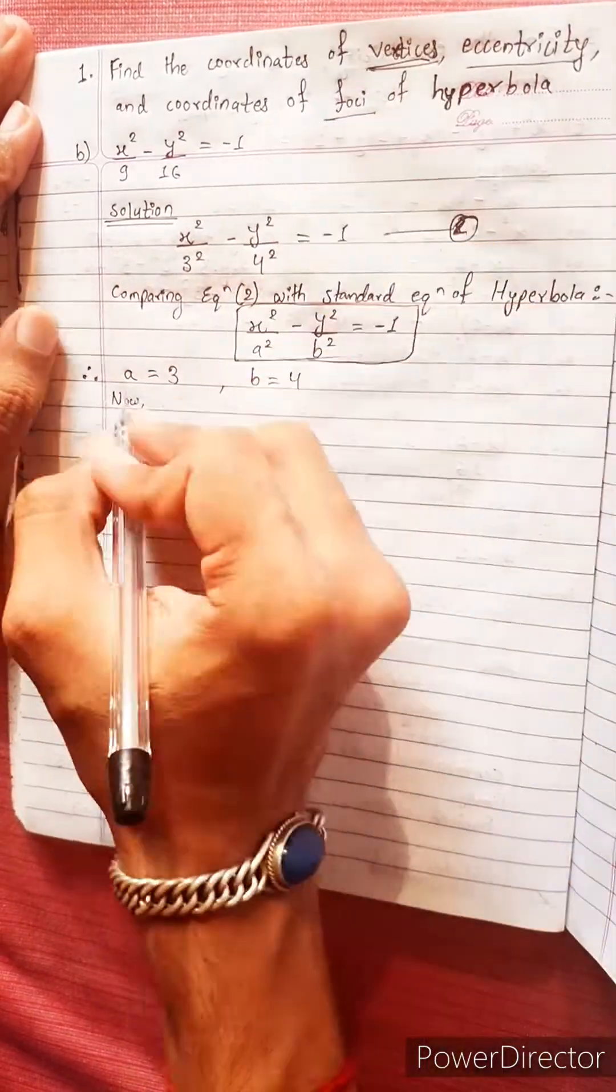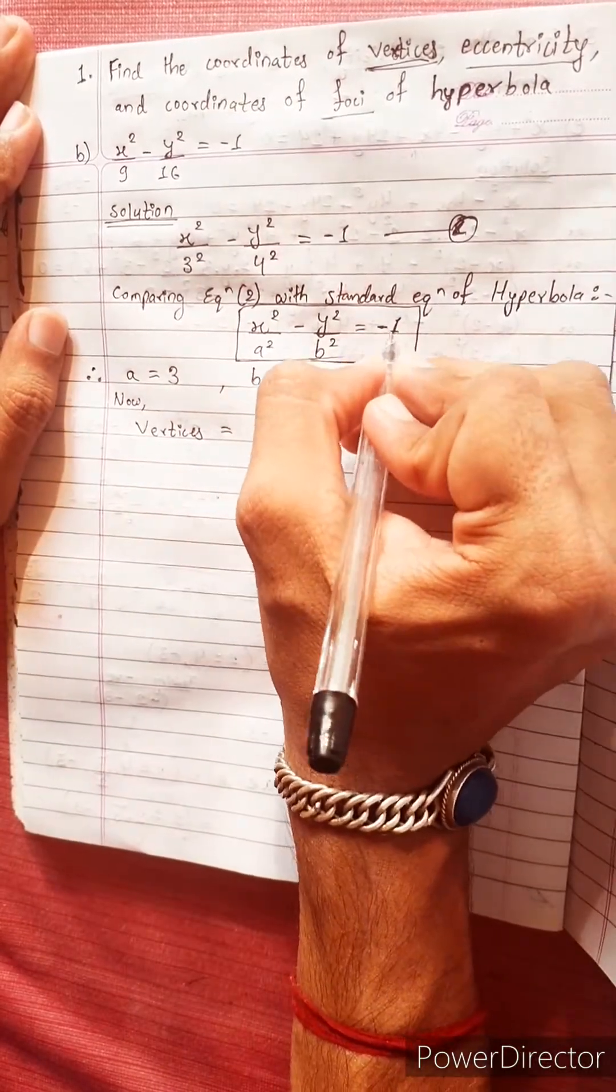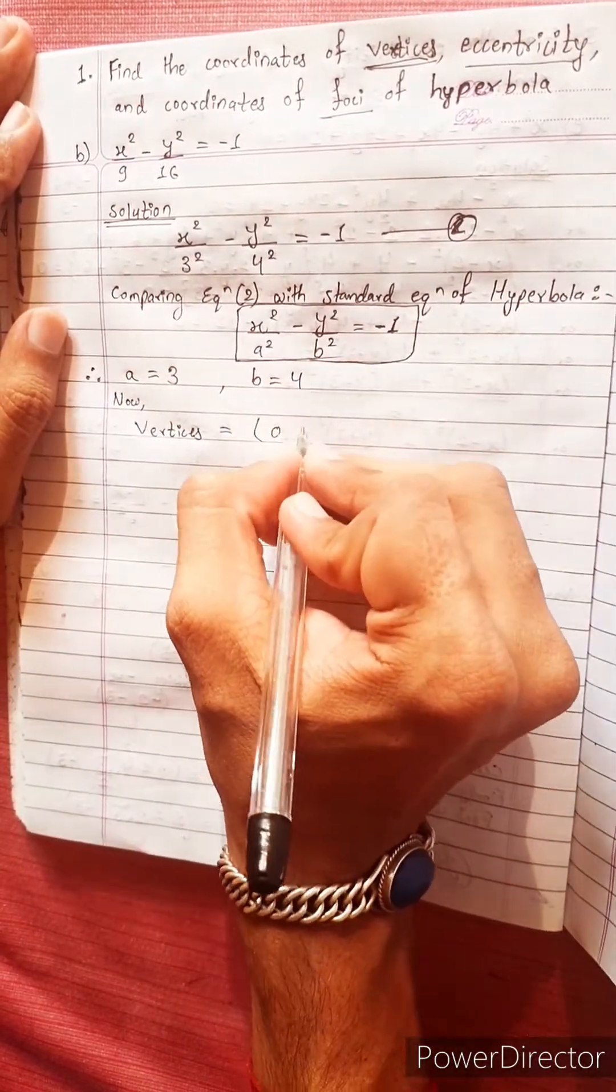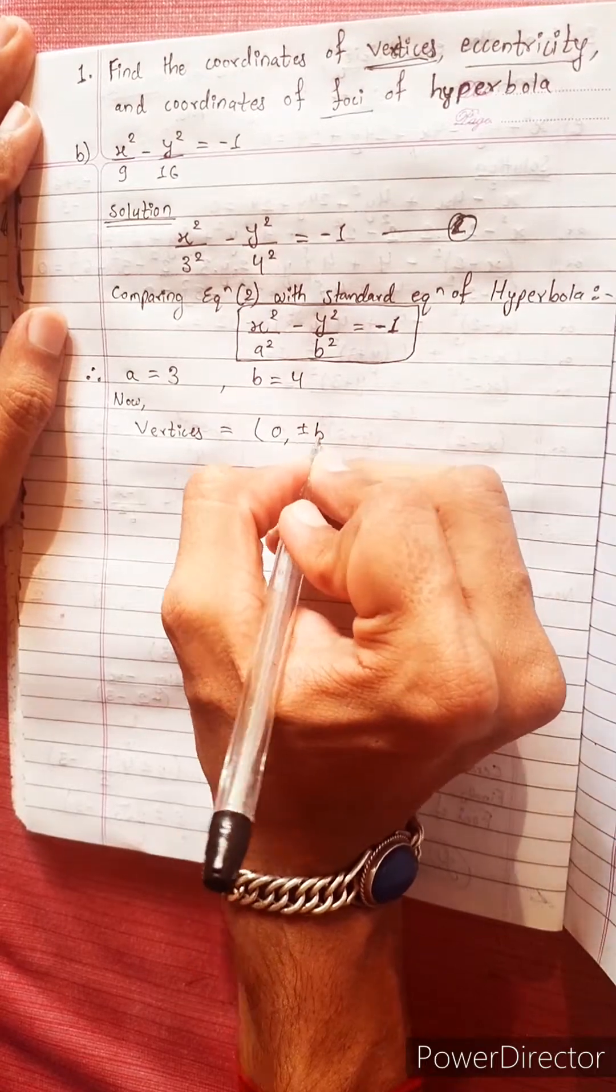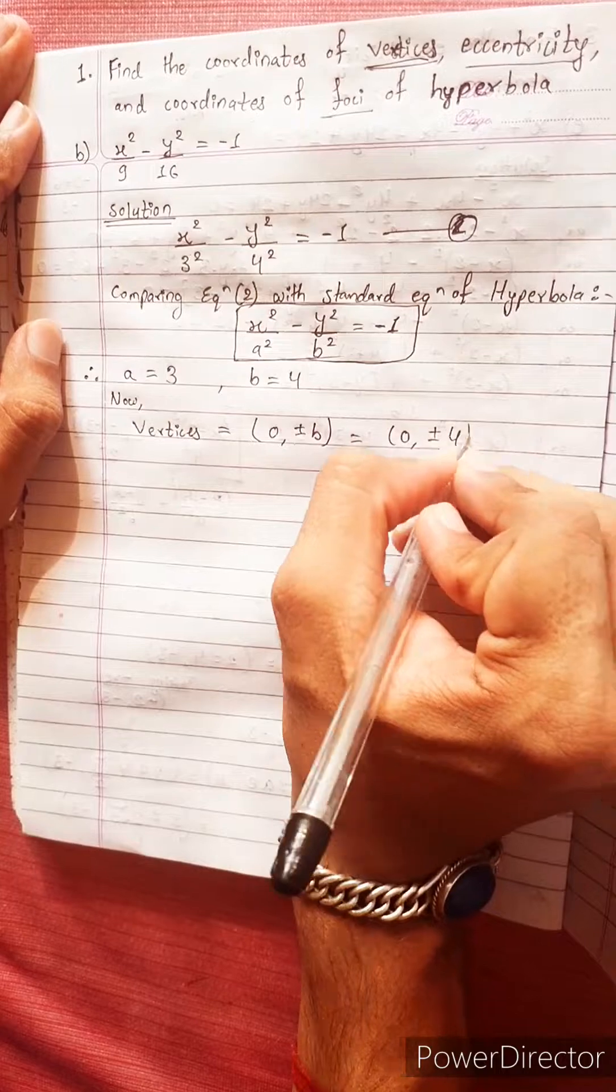Now, vertices. The vertices formula is (0, plus minus b) equals (0, plus minus 4).